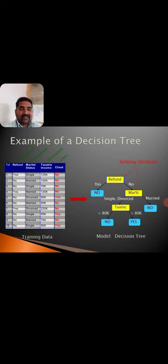If we take this example, the training data columns are refund, marital status, taxable income, and cheating records. For example, in the first record the refund value is yes, marital status is single, taxable income is 125,000, and cheating is no.